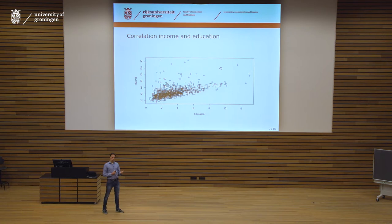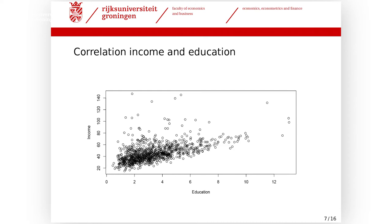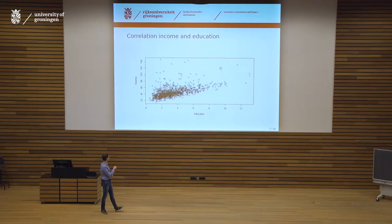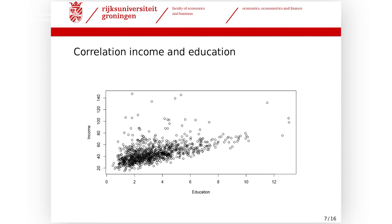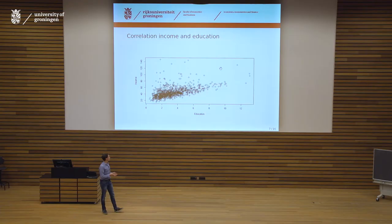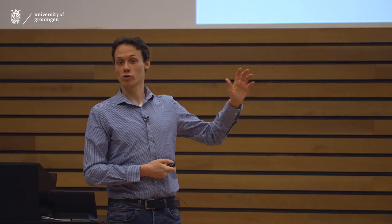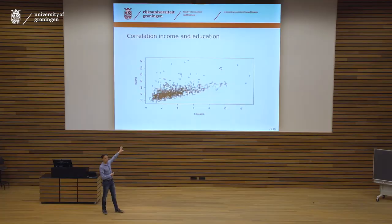Similar to the ice cream and drowning example, we plot education against income to see what the data tells us. On the horizontal axis we have education, vertical axis income. We see that low levels of education tend to correspond to the lowest incomes. For high education there's no low income. But it doesn't mean low education always means low income — in the Netherlands the best way to make a lot of money is to become an entrepreneur with a great idea.